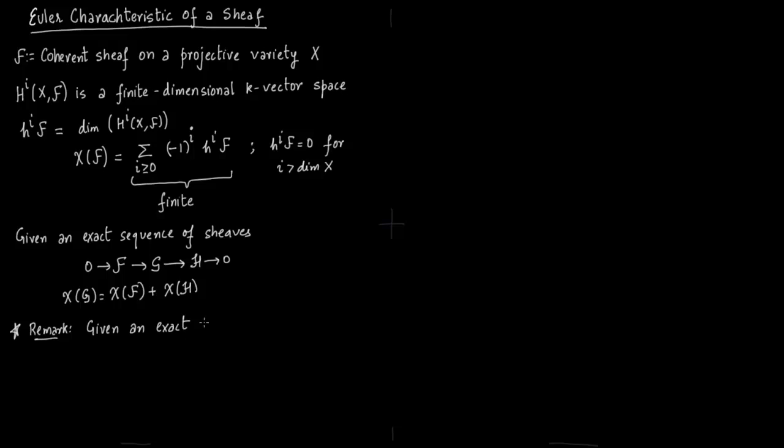So if you are given an exact sequence of k-vector spaces, say 0 to V_1, 0 to V_0 to V_1 to V_2 to V_3 all the way to V_n to 0.